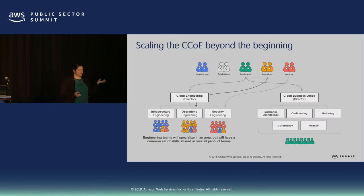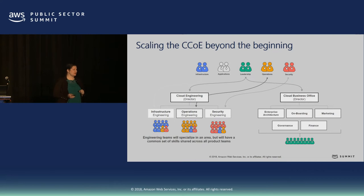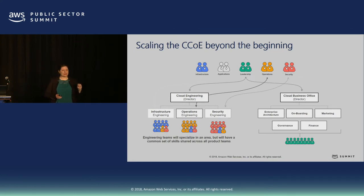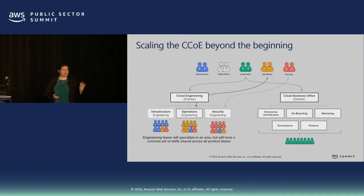We started with a small group — maybe six to ten people max. But as our organization grows and starts thinking more all-in, the CCOE is going to scale. I've seen it scale up to five to ten percent of an IT organization, depending on size. The key thing is the types of people are still going to be there, but there are never siloed teams — infrastructure teams still have security and operations members on them.